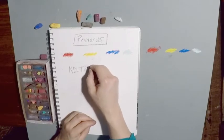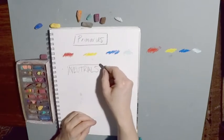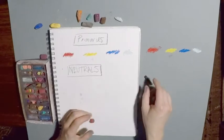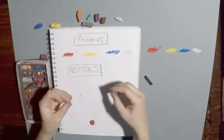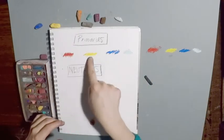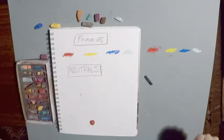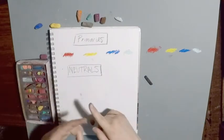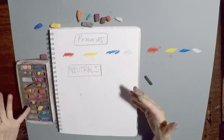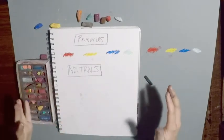Once you understand neutrals, it's really empowering knowledge, especially if you're applying it to portraiture. Neutrals are going to be colors that are not saturated — it's the opposite of saturated, the opposite of chromatic. These very chromatic, bright, saturated colors are the opposite of neutrals. Neutrals are going to be your blacks, browns, and grays. But we're not going to be creating these grays with just black and white — rather, we're going to be combining complementary colors.